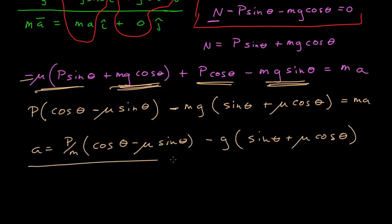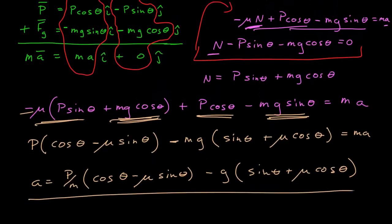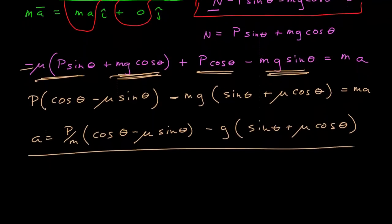Does this make sense? If g is larger, a is smaller — that makes sense. If m is larger, a is smaller. If the pushing force is greater, a is larger. So that all makes sense.